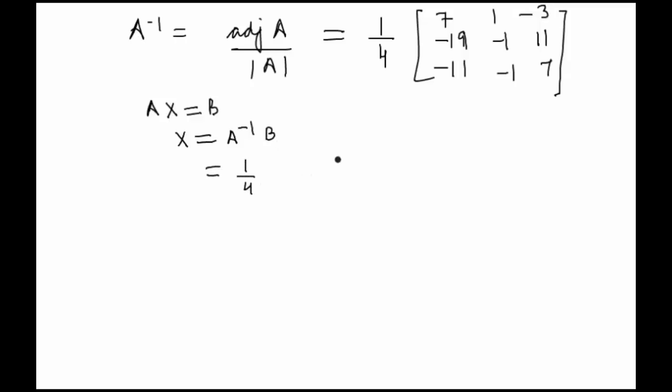We get 1 by 4 times the matrix 7, 1, minus 3; minus 19, minus 1, 11; minus 11, minus 1, 7, multiplied by 7, minus 5, 12. First we will do the matrix multiplication.